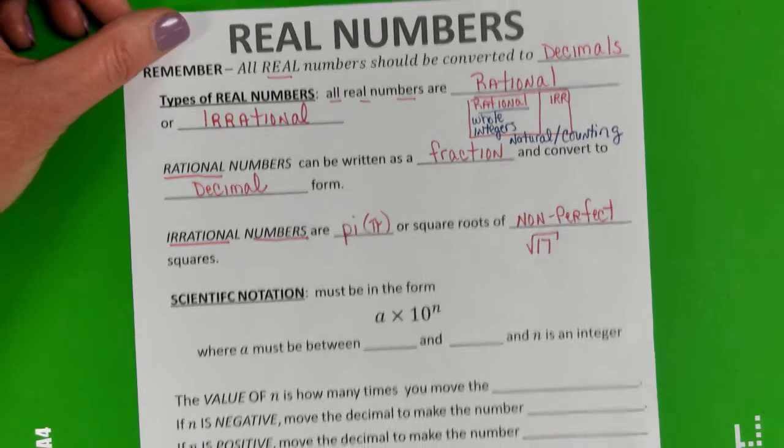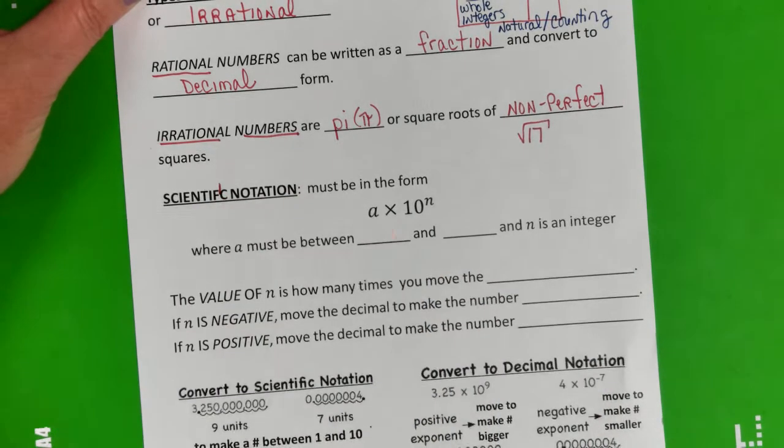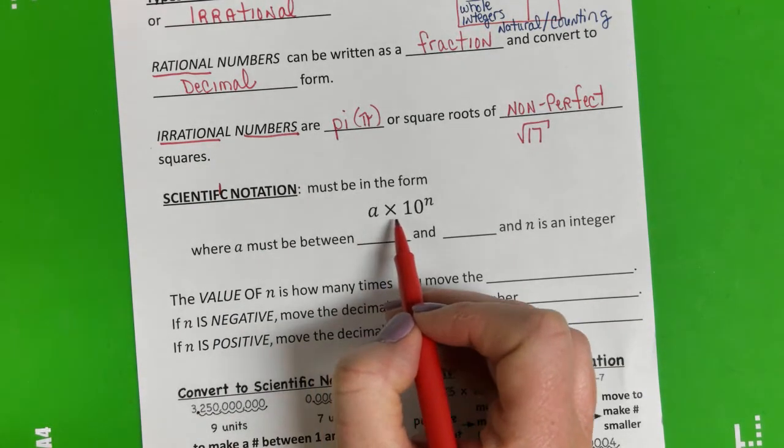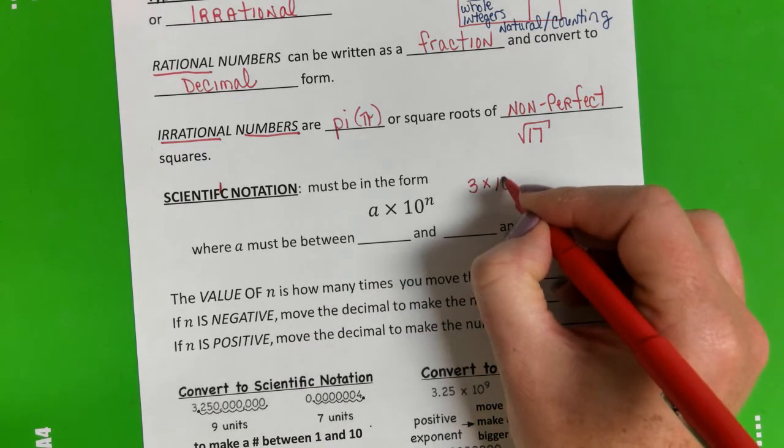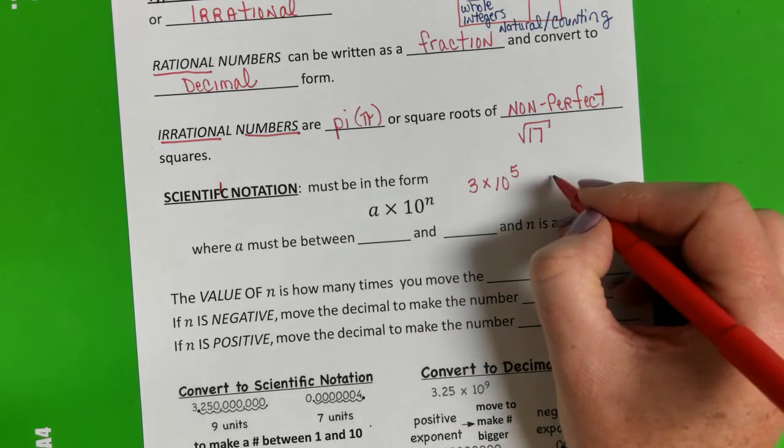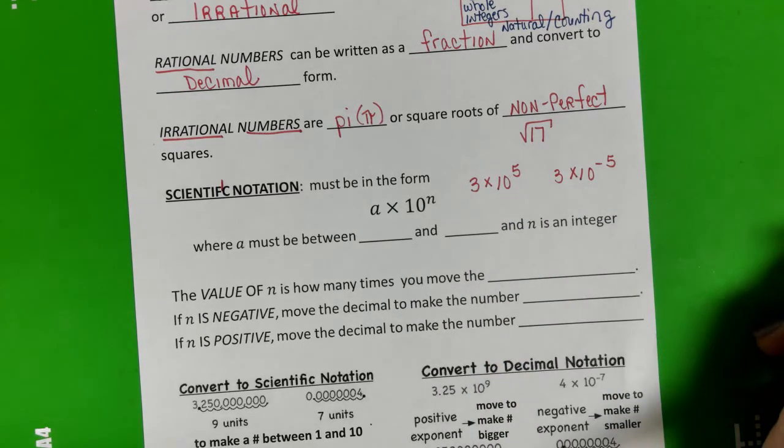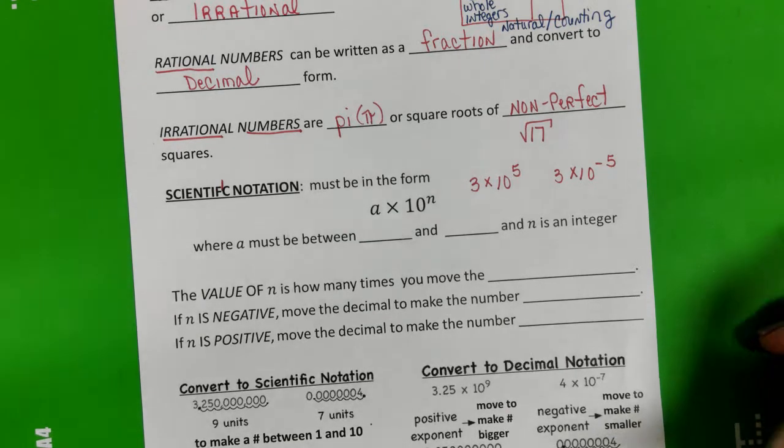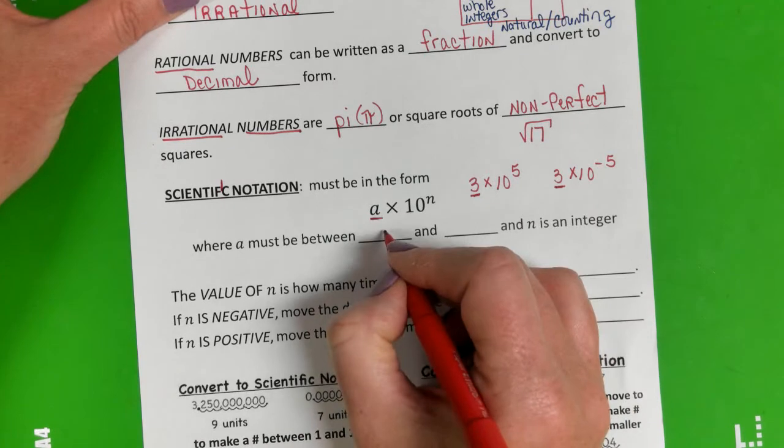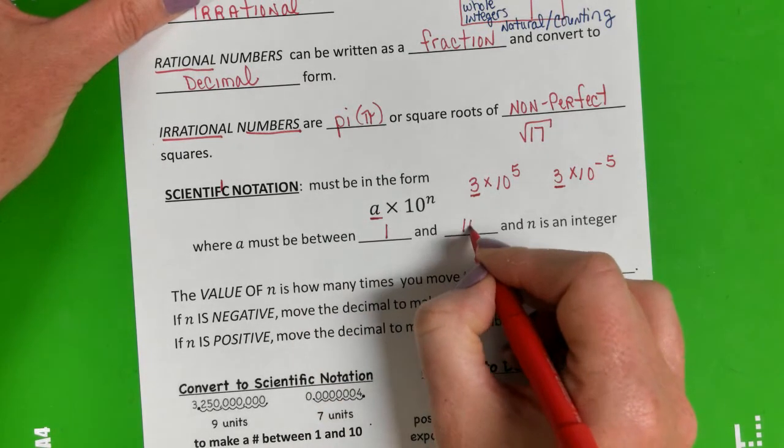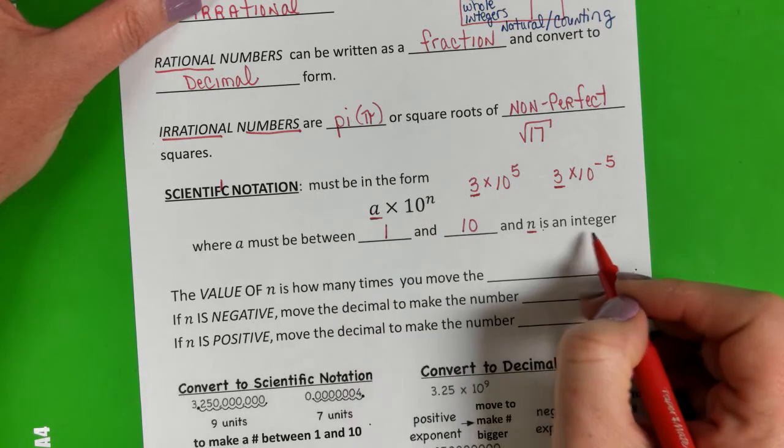Here we have scientific notation. Remember scientific notation must be in this form. An example with numbers might look like this, or 3 times 10 to the negative 5—that's what it looks like in scientific notation. Remember the a value, the number out front, has to be between 1 and 10. It can be a decimal, and then the n, the exponent, is an integer.